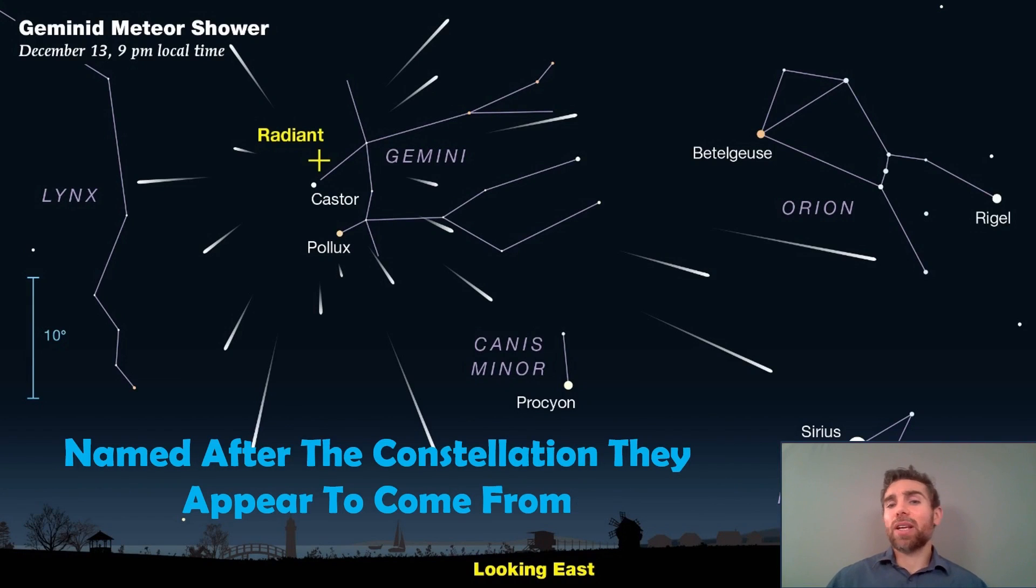They're normally named after the constellation they actually originate from. So this one here, the Geminids, they actually originate from the Gemini constellation. You can see there the yellow cross is the radiant point. That is basically where they originate from. So if you were to find this constellation, this occurs basically in December.